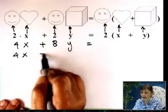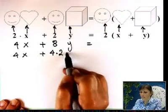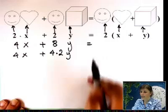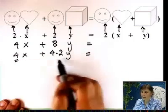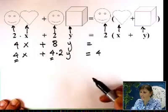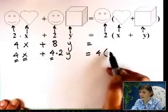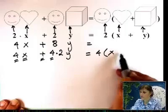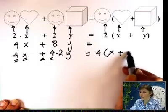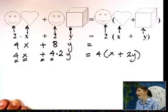You can write 4x. 8 is actually 4 times 2y equals. Now what's repeating? 4 is repeating. So you can pull the 4 out. And you will have x plus 2y. Do you see that?